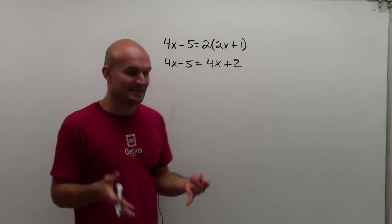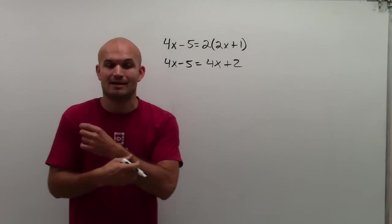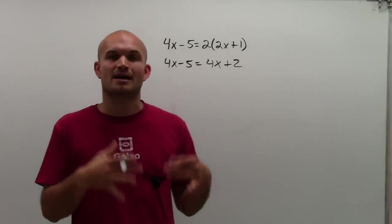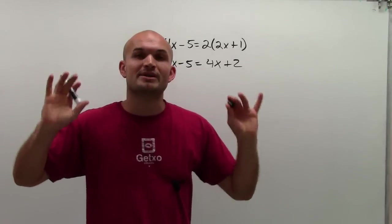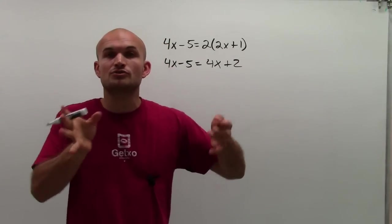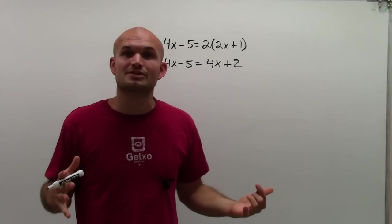So now what I need to do is I need to get my variables on the same side. And remember, to get your variables on the same side, we just need to understand equivalent equations. As long as you do the same operation to both sides of your equal sign, you're going to keep equivalent equations.